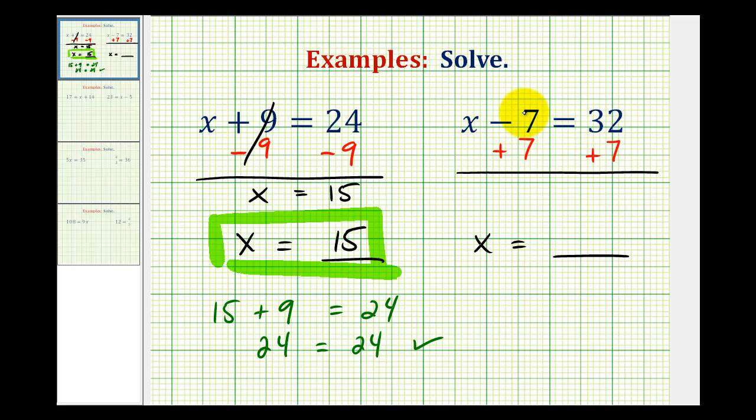Well, minus 7 plus 7 would be 0. So now we're left with x on the left side, which is good news. And the right side is now 32 plus 7, which would be 39.